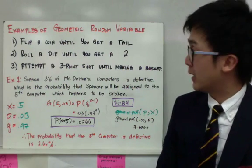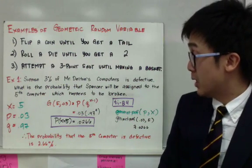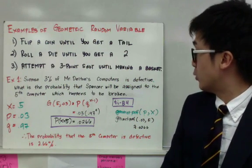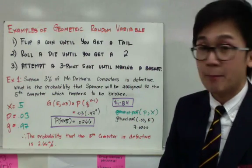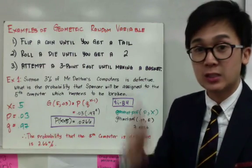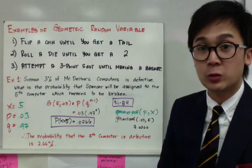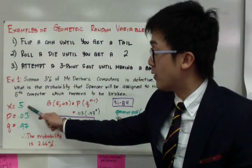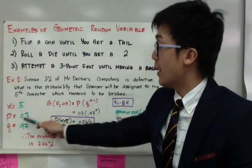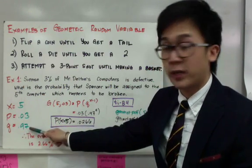For example number one, suppose 3% of Mr. Delton's computers are defective. What is the probability that Spencer will be assigned to the fifth computer, which happens to be broken? This is a geometric distribution because it satisfies the four conditions. Organizing our givens: X equals 5 (the fifth computer), p equals 0.03 (probability of success), and q equals 0.97 (probability of failure).